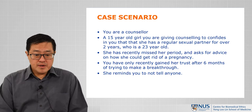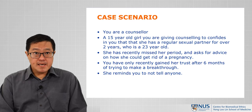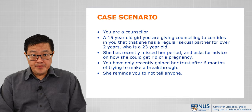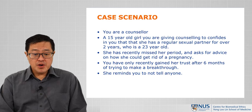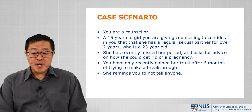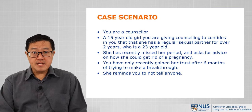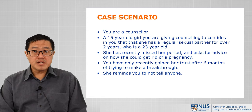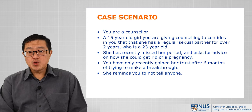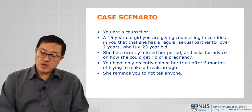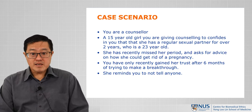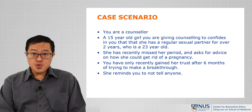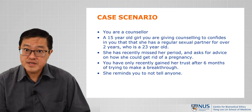Now we'll come to the first case scenario. Hypothetically, you're a counsellor. A 15-year-old girl you're giving counselling to confides in you that she has a regular sexual partner for over two years who is 23 years old. She has recently missed a period and asked for advice on how she would get rid of any pregnancy. You have only recently gained her trust after six months of trying to make a breakthrough. She reminds you to please not tell anyone. What would you do — or more pertinently, what would you have to do if you came across this sort of situation?